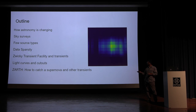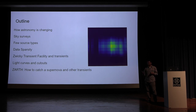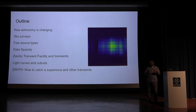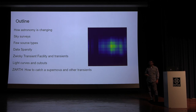Even if 90% of stars are constant and only 10% show variability, because we observe a billion stars that's still a large number. Every night we find about 100,000 transients — objects that change in brightness. We select about 200 of those and put them into the app; every night we upload new transients. Think of ZARTH as Pokémon Go but for astronomy — you can catch transients like Pokémon. Understanding light curves, which show how an object changes in brightness over time, is central to this.